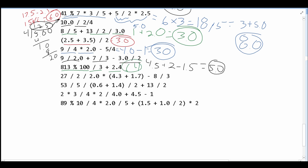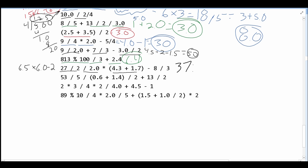Next, we have 27 divided by 2, giving us 13. Then we are dividing this by 2.0, so 13 divided by 2.0 is 6.5. We then multiply by the addition of 4.3 and 1.7, which is 6.0. So we're multiplying 6.5 by 6.0, and then subtracting 8 divided by 3, which gives us 2. 6.5 times 6 is 39, and subtracting 2 gives us 37.0.